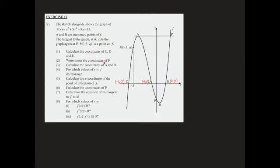Question 2 says write down the coordinates of f. It feels like this should have been question 1 because it's easier. f is our y-intercept and we can see that our y-intercept is at negative 12. So when you write down your answer, please remember they're looking for coordinates, so you must write down that it's 0 and negative 12.